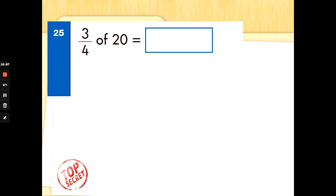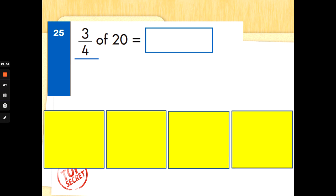Okay. 3/4 of 20. Let's have a go at this one. Step 1. Bottom number. Let's draw 4 boxes out. Okay. Next step. Let's share the 20 between the 4 boxes. Let's go: 1, 2, 3, 4, 5, 6, 7, 8, 9, 10, 11, 12, 13, 14, 15, 16, 17, 18, 19, 20.